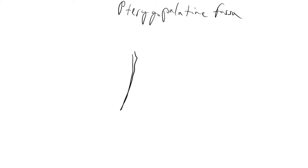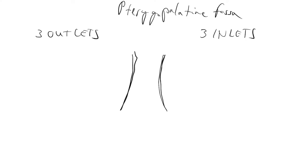Why am I saying this? Because, as you know, Deák Square is a connection between three metro lines, and the Pterygopalatine fossa has three inlets and three outlets. And inside of this you find, as I said, the Pterygopalatine ganglion.